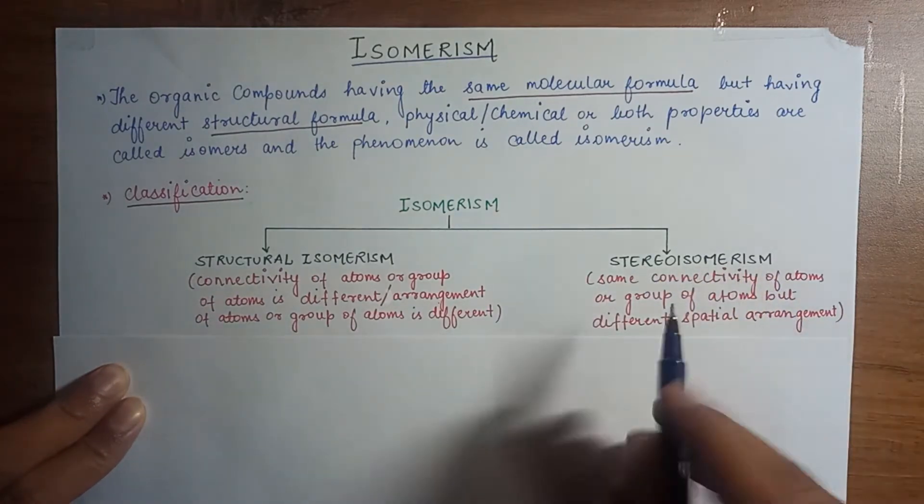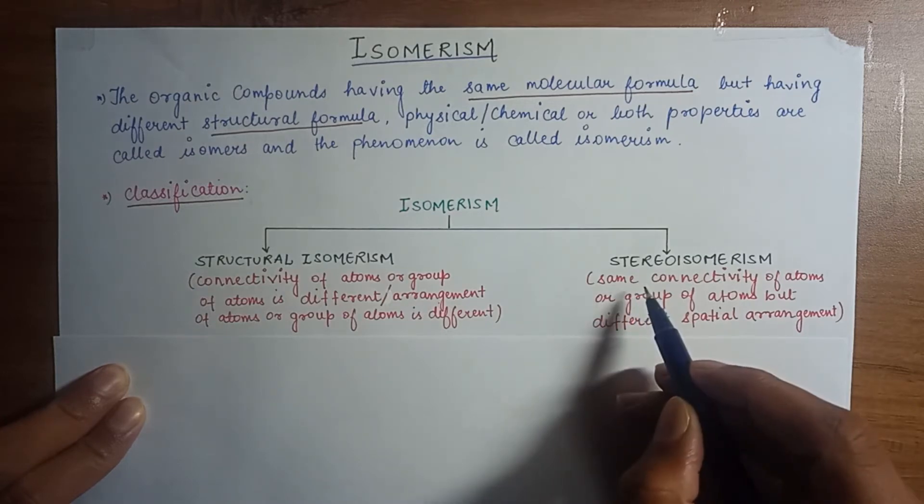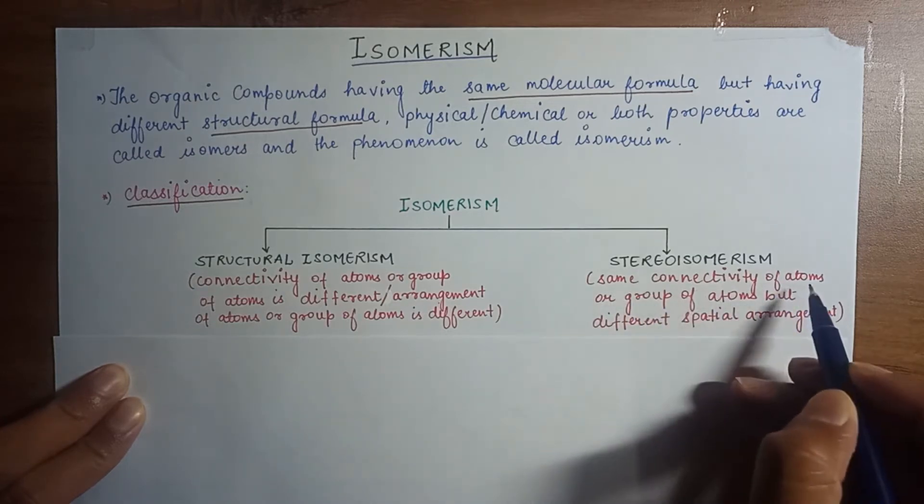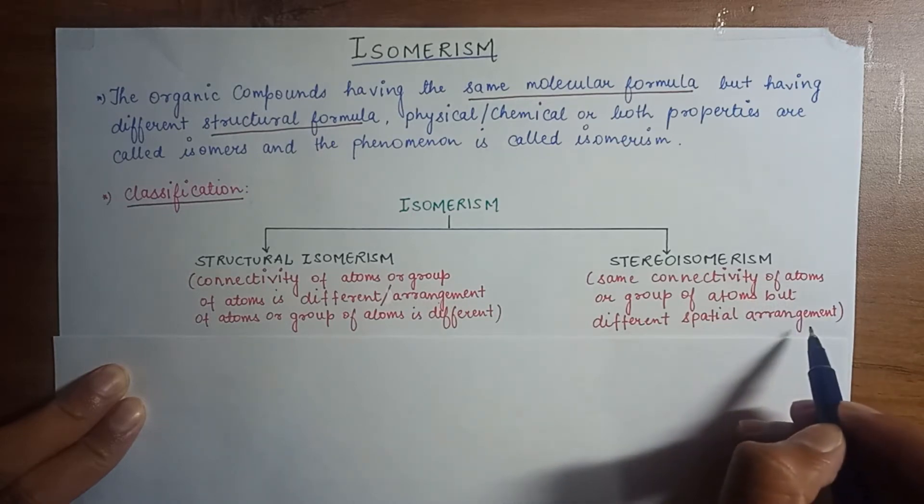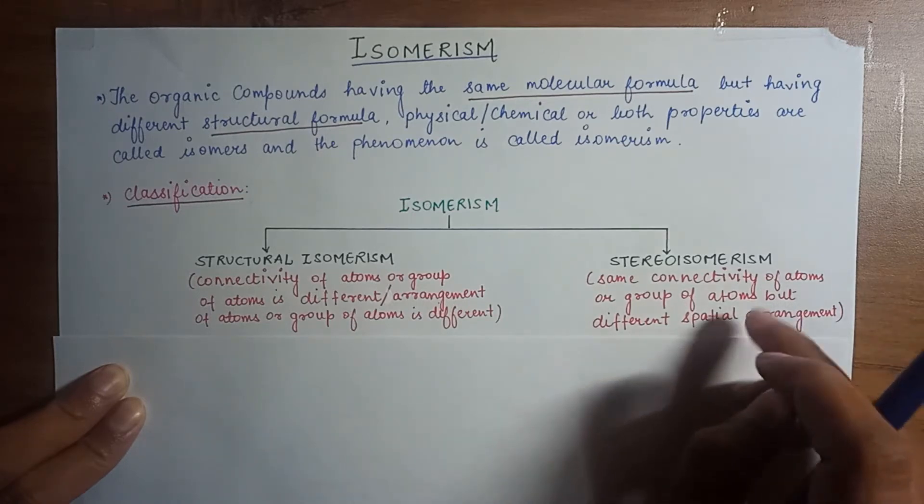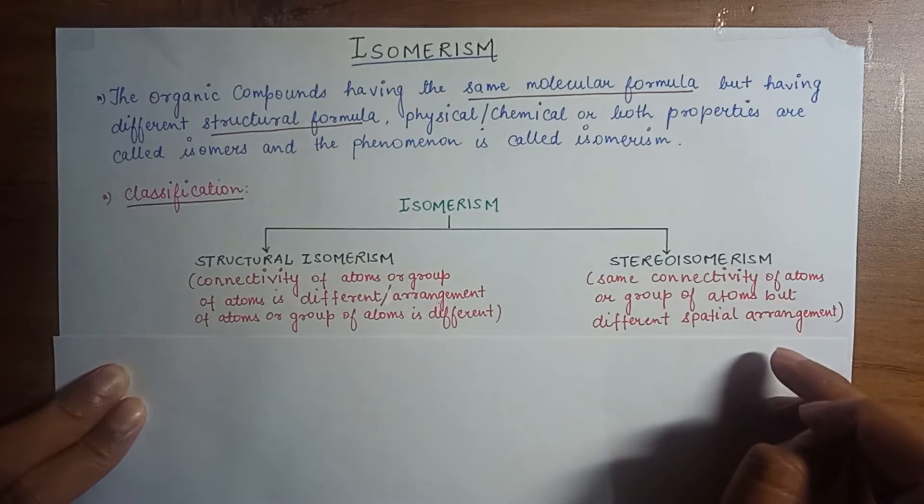Stereoisomers, how they are defined? They have the same molecular formula, same connectivity of atoms or group of atoms but different spatial arrangement. It means that the atoms are arranged in different way in space.